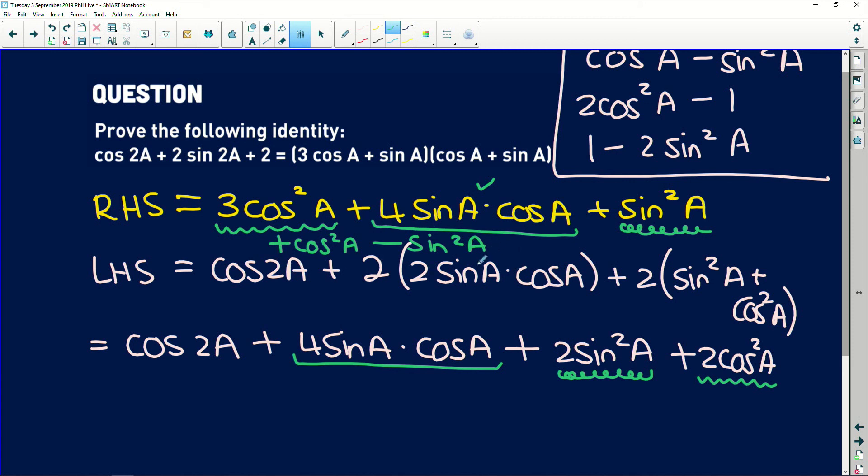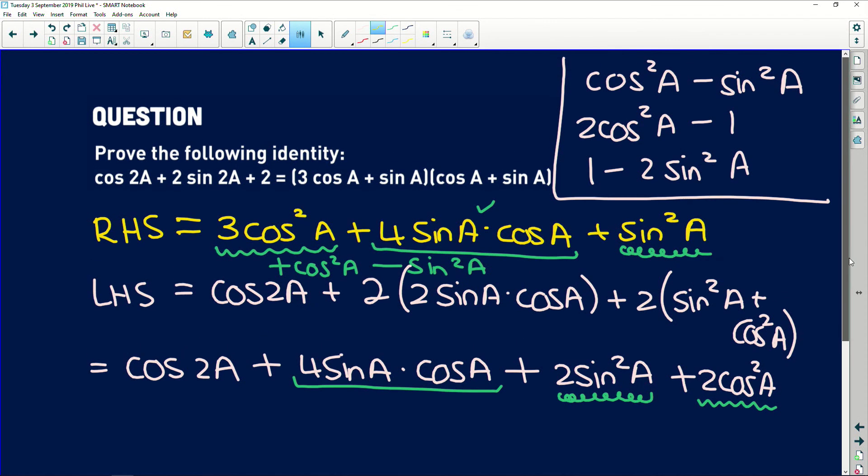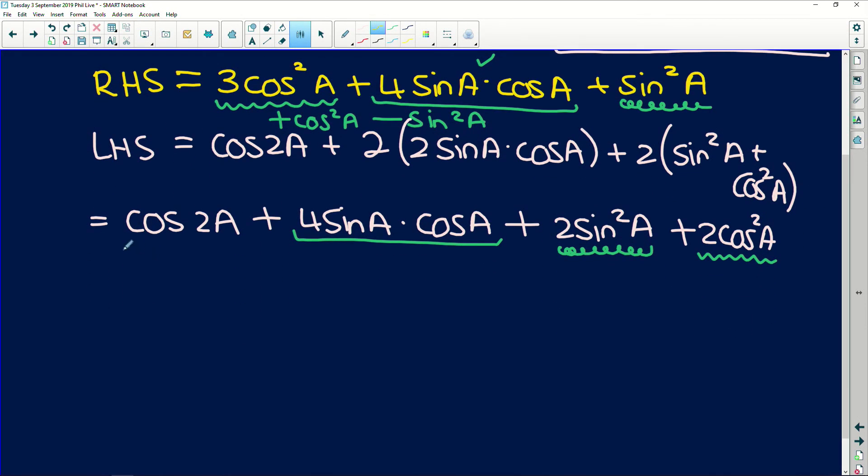How do we do that? Well, this is where our expansion of cos 2A comes in. Is this not exactly one expansion of cos 2A? If we put that in to our cos 2A, we're going to get that exact same expression. So let me write that in. Now we can say that cos 2A is cos squared A minus sin squared A, and then we have the whole rest of our expression, which is exactly what we needed: 4 sine A times cos A plus 2 sin squared A plus 2 cos squared A.